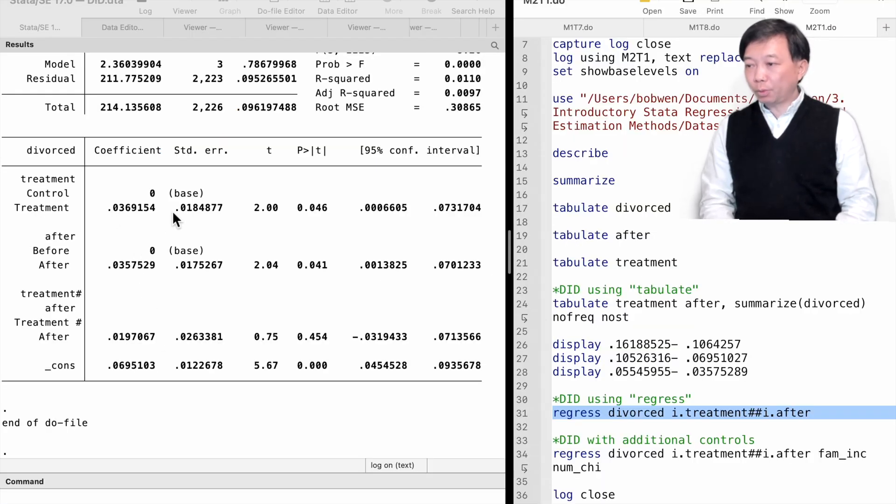We can interpret the estimates this way. Before the law enforcement, the treatment state, Indiana, had a 3.7 percentage points higher divorce probability than the control state, Illinois. For the control state, Illinois, the divorce probability increased by 3.6 percentage points after the law took place in the neighboring state. The coefficient of the interaction term is the estimate of the average treatment effect. That is the causal effect of the no-fault divorce law on divorce cases. It is around 2 percentage points. It is the same value as we calculated using the tabulate command. The treatment effect is not statistically significant at the 10% level. The no-fault divorce law causes divorce cases to increase, but is not statistically significant.